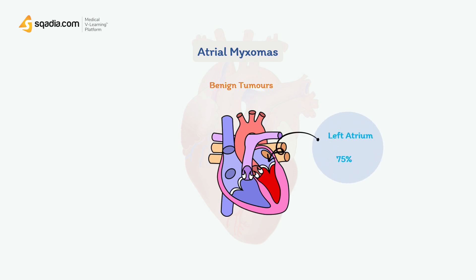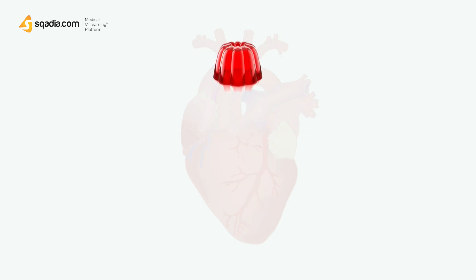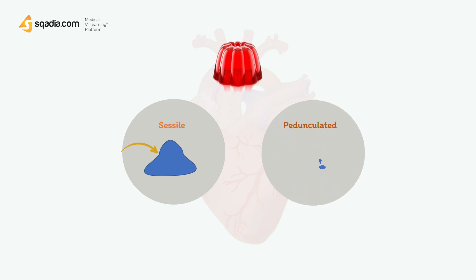The majority of myxomas develop in the left atrium, making up 75% of incidences, whereas 25% present in the right atrium. The myxoma is sometimes described as a jelly-like substance or a cluster of cells. They are often hemorrhagic and of variable firmness. They can be sessile, meaning attached at the base and immobile, or pedunculated, meaning attached by a stalk — which is more common — and may range in size from 1 to 10 cm.